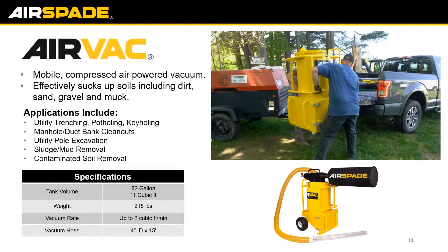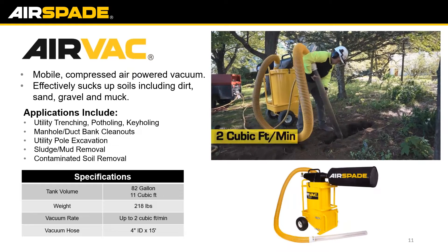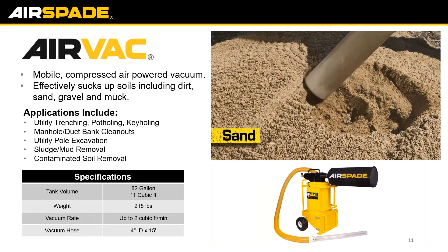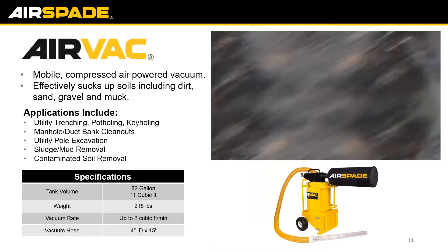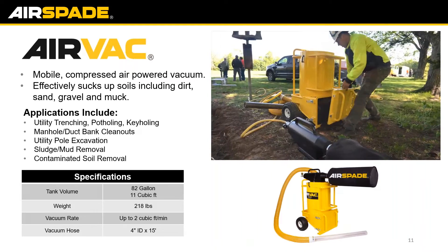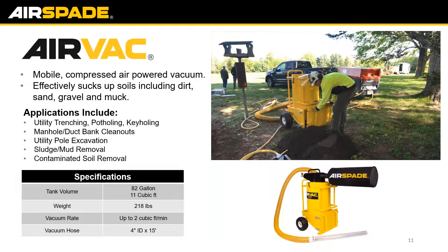We do manufacture a product called the Air Vac. The Air Vac is a mobile vacuum unit that acts in the same manner as a vacuum truck, just at a much smaller scale. It's going to effectively suck up soil, dirt, gravel, and any muck. As you can see in the video, it has a very lightweight aluminum body, so two people can easily load or unload it from a pickup truck. It also sucks up two cubic feet of dirt per minute, making it very effective in multiple soils or gravels. The Air Vac can run off the same exact compressor as the Air Spade — most people will use them together, using the Air Spade to loosen material and the Air Vac to suck it up and out of the trench.